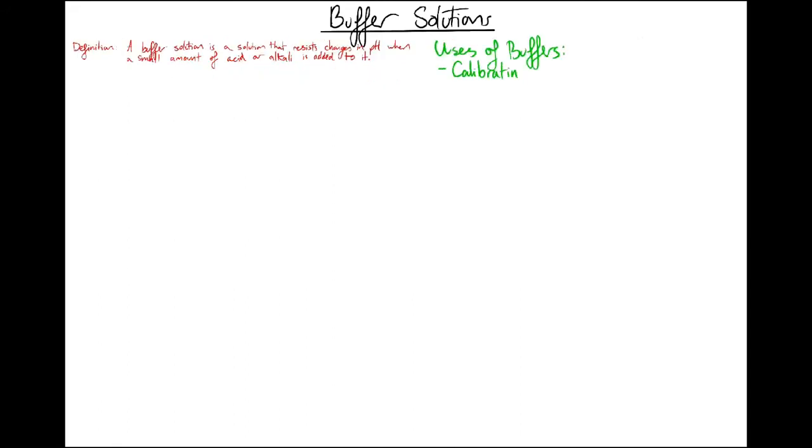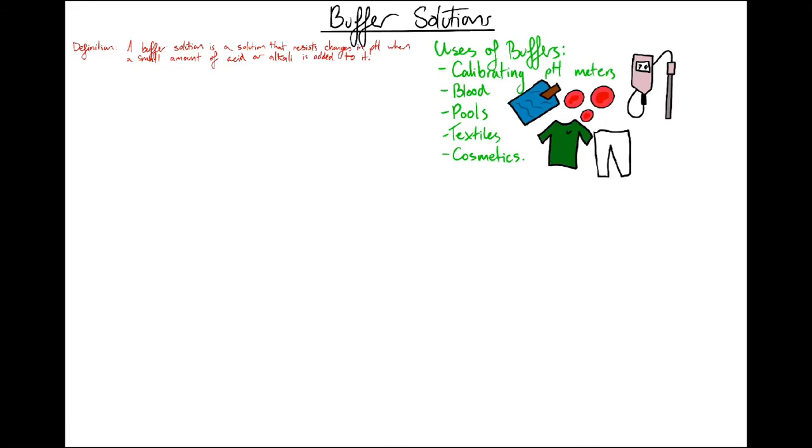What are buffers used for? There's a lot of different uses for buffers in industry and in your body. We use them to calibrate our pH meter in practical 9. There's a bicarbonate carbonate buffer in your blood to keep it at a constant pH of 7.4. They're used in pools to stop it hurting your eyes and textiles and cosmetics to keep stuff at a constant pH so it doesn't damage your skin or the dyes.